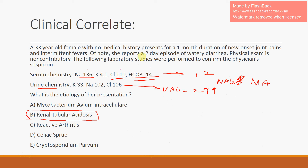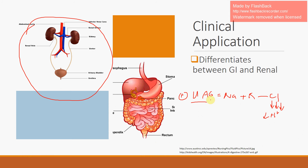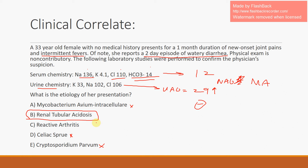The two-day history of watery diarrhea is somewhat of a red herring, especially in the setting of intermittent fevers. In a real diarrhea producing secondary NAGMA, we would expect the urine anion gap to be negative, because the kidneys would be compensating for the loss of bicarb by excreting protons massively, making chloride high in the urine. Since that's not the case here, A, D, and E are out. Between B and C, reactive arthritis wouldn't have serum chemistry abnormalities, so the answer is B.